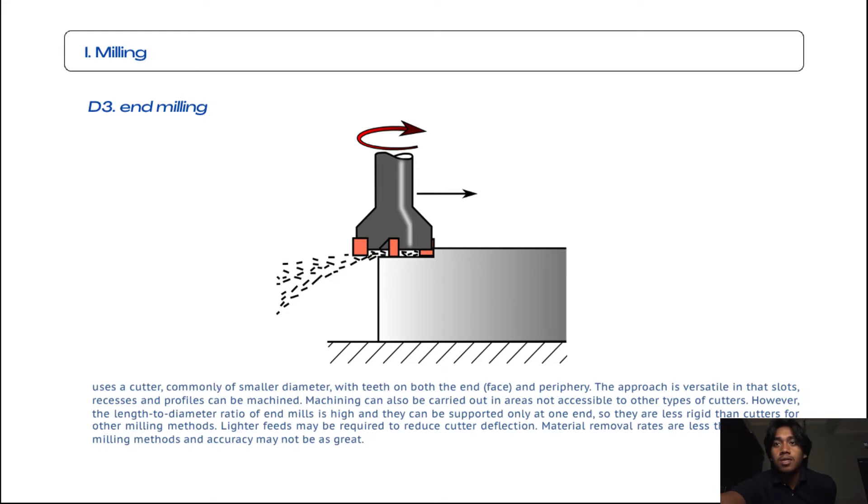The third subtopic for milling is end milling. End milling uses cutters commonly of smaller diameter with teeth on both the end face and periphery. The approach is versatile in that slots, recesses, and profiles can be machined. Machining can also be carried out in areas not accessible to other types of cutters. However, the length to diameter ratio of end mills is high and they can be supported only at one end, so they are less rigid than cutters for other milling methods. Light feeds may be required to reduce cutter deflection, so material removal rates are less than with other milling methods and accuracy may not be as great.